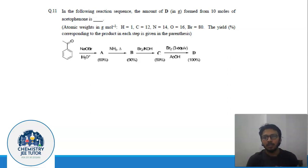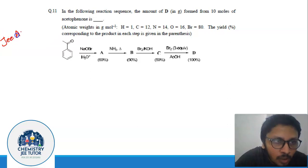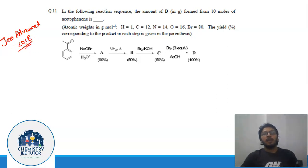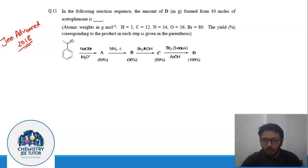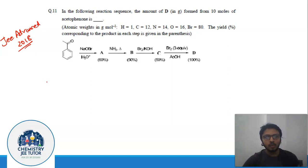See the question carefully. This is also a question from JEE Advanced 2018, question number 11, if you want to cross-check from your question paper. It is asking you to find the amount of D from 10 moles of acetophenone, which is the starting material, and it gives the yield of all of the steps. You need to understand the reaction sequence first — that is the first thing. Then it is just a simple technique to apply.